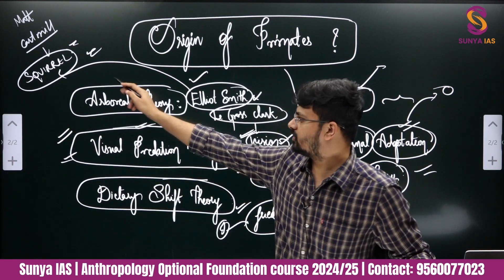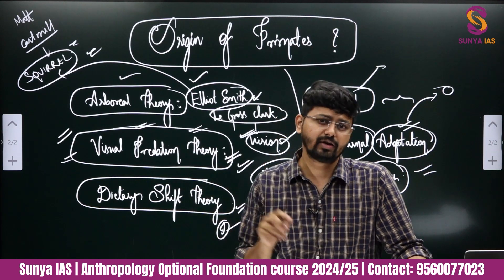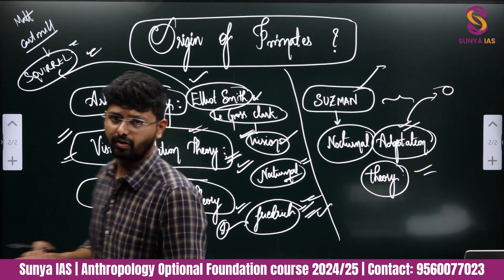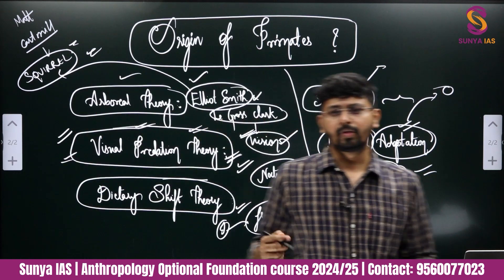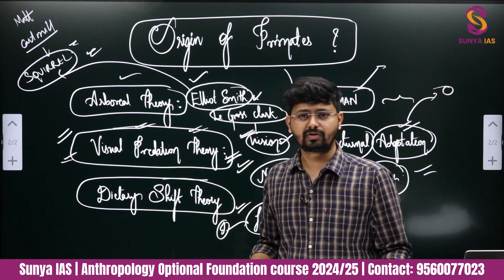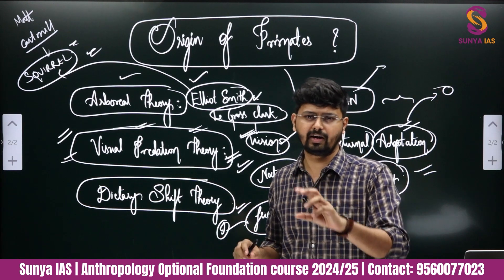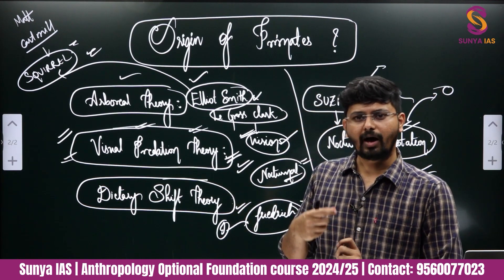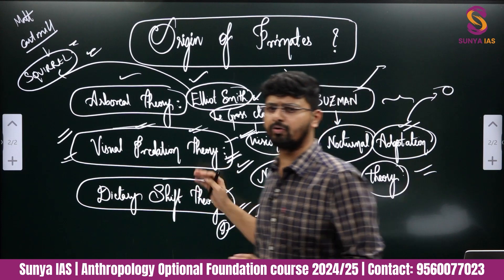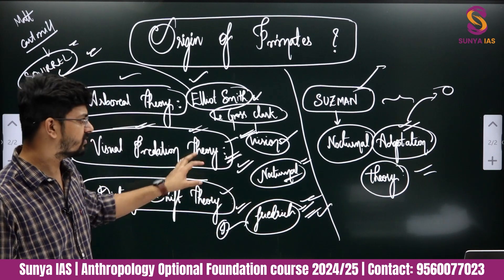Cartmill countered the arboreal theory using the squirrel example. He says mammals were insectivorous but living under bushes on the ground — not on trees. To find food for predation in green, lush bushes, they needed proper vision, and from that primates originated. Then the dietary shift by Friedrich, and Susman's combination of nocturnal adaptation and diet — Susman's theory is the most accepted currently.